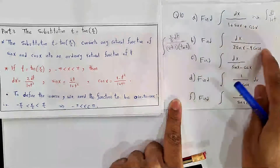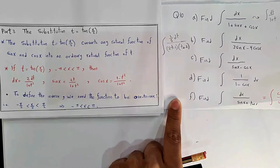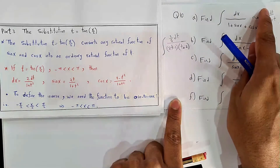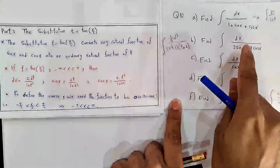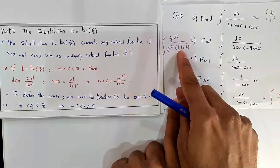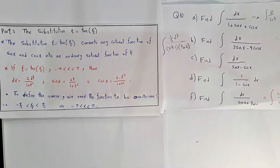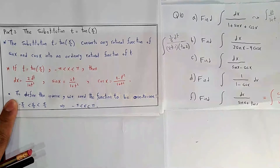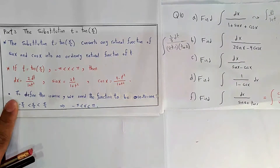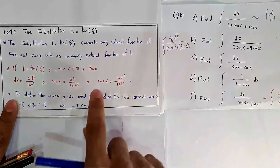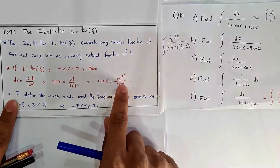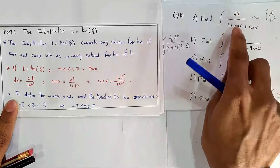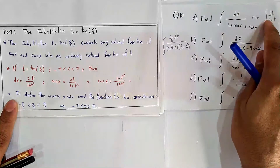The substitution t = tan(x/2) will convert any rational function of sine and cosine into an ordinary rational function of t. For example, integrals involving sin, cos, etc. are rational functions of sine and cosine. Using this substitution, one integral transforms to 1/(1+t) and another to 1/((2t−1)(t+2)), to which we can apply partial fraction techniques. If t = tan(x/2), then dx = 2dt/(1+t²), sin x = 2t/(1+t²), and cos x = (1−t²)/(1+t²).